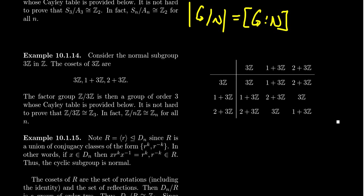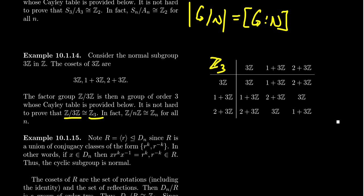Going through all these combinations: 0+0=0, 0+1=1, 0+2=2; 1+1=2; 1+2=3, but 3 is a multiple of three so that's the same as the coset 0+3Z. The Cayley table here is exactly the same as working with addition mod 3, up to relabeling of symbols. We in fact see that Z mod 3Z is isomorphic to the cyclic group of order 3. This happens in greater generality: Z mod nZ is isomorphic to the cyclic group Zₙ.